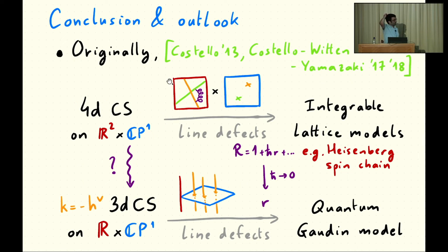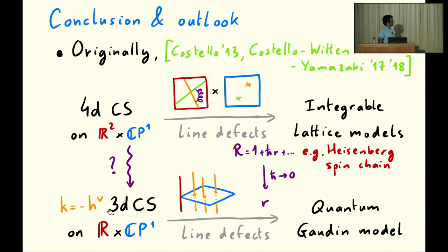The original story of Costello from 2013 was about producing lattice models — further expanded on by Costello and Yamazaki — and in particular, lattice models such as the Heisenberg spin chain, of which a limit is the Gaudin model. In this talk, I mentioned that the Gaudin model can be obtained from 3D Chern-Simons theory at critical level in the quantum case. It would be interesting to understand how this diagram commutes: on one side you take the classical limit of the Heisenberg spin chain to get the Gaudin model; what is the analogous procedure to go from 4D Chern-Simons to 3D Chern-Simons which describes the Gaudin model? It would be interesting to understand how the choices of line defects to produce Heisenberg relate to the choices introduced here to produce the Gaudin model.